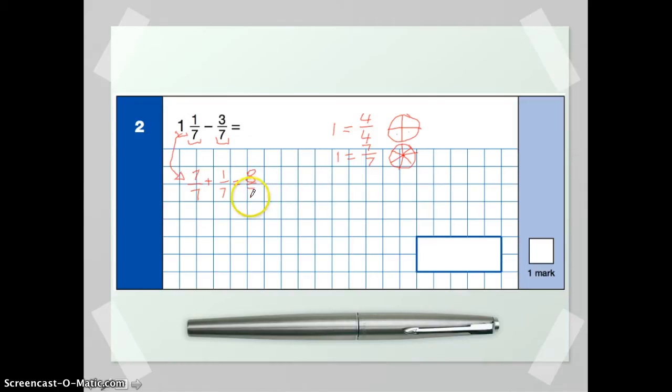Now, we call this a top-heavy fraction because the numerator, the number on top, is larger than the denominator, which is the number underneath.